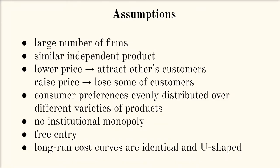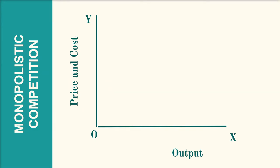To explain Chamberlin's concept of excess capacity with price competition, we use his concept of group equilibrium — the equilibrium of the industry under monopolistic competition. Because every product is differentiated, Chamberlin uses 'product group' instead of 'industry,' grouping firms producing very closely related products. The long run group equilibrium uses two demand curves: the upper case DD representing industry demand, and the lower case dd representing the individual firm's demand.